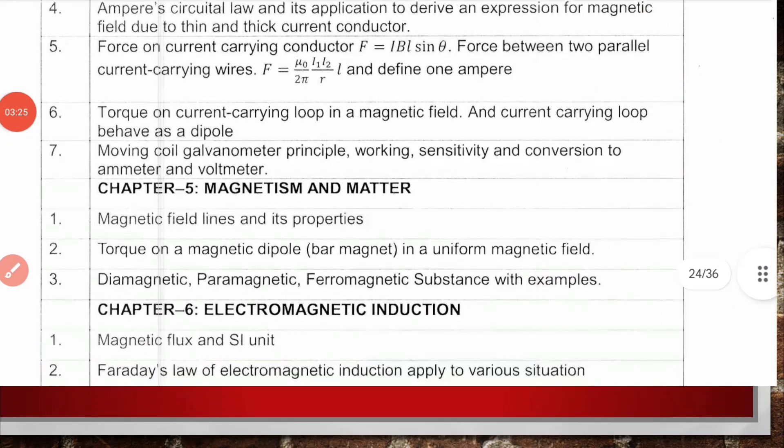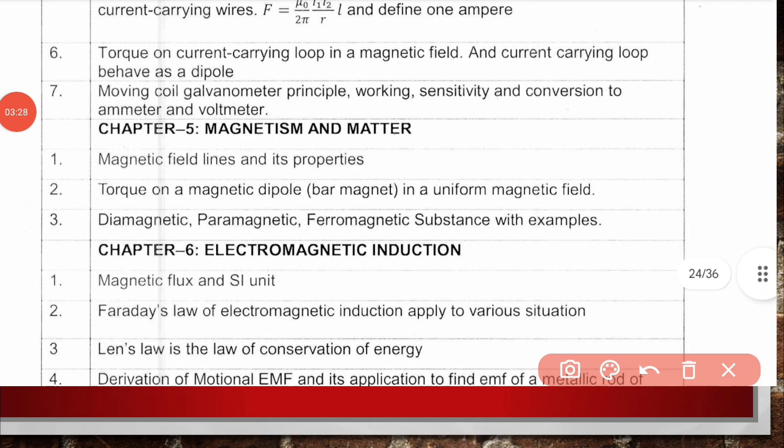Chapter 5, Magnetism and Matter: magnetic field and its properties, torque on magnetic dipole in uniform magnetic field, and diamagnetic, paramagnetic, and ferromagnetic substances with examples.